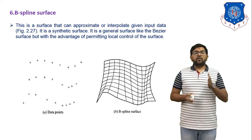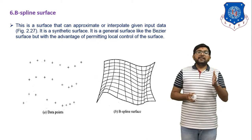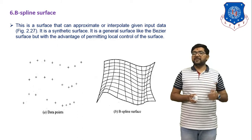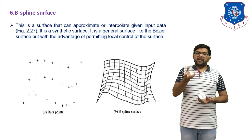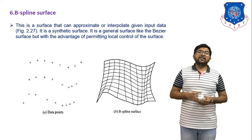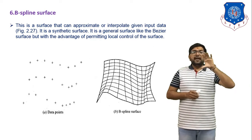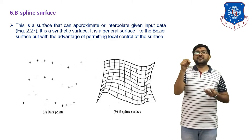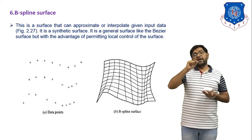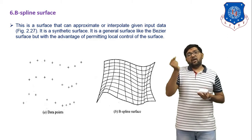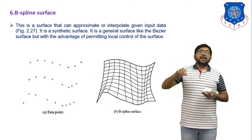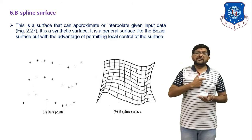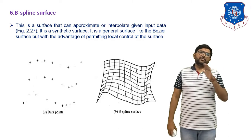Next is the B-spline surface. It is a surface that can approximate or interpolate given input data. It is a synthetic surface, general like the Bezier surface, but with the advantage of offering a local control option — meaning this is an advanced form of Bezier surface. We have some data points; we join all data points with free-form curves and one surface is generated. In that case all data points are connected with each other and each data point is considered a control point. If you change the position of any control point, the shape of the surface will also change.